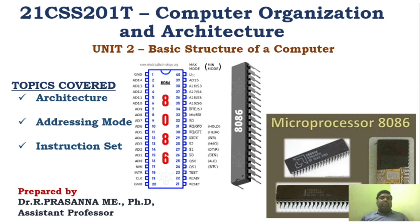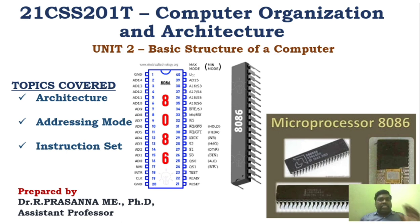So far in this unit, we have seen what is the basic structure of a computer. We have seen all the organizational concepts, the memory locations, the addressing modes, and the instruction sets in the processor. We have also seen the basic operation of the processor. And now, we are going to see the microprocessor 8086 as a case study. As a case study, you can just go through the architecture alone, and for addressing modes and instruction sets, you can follow the basic ones we have seen so far — only small changes will be there. So, we will start with the architecture of 8086.